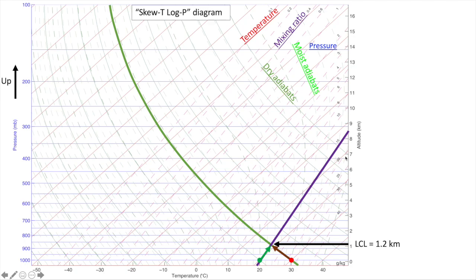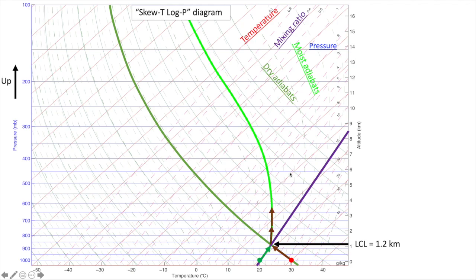After the LCL is reached, the parcel will no longer cool at the dry adiabatic lapse rate. As the parcel is lifted further it will be releasing latent heat due to condensation of water vapor, and it will still cool but at a less rapid rate — the moist adiabatic lapse rate. Note that we made all these calculations without vertical measurements of temperature or dew point from a weather balloon or radiosonde.